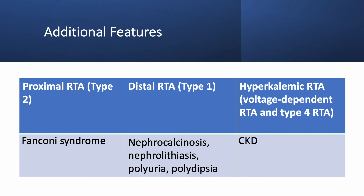Additional features are very helpful. In proximal or type 2 RTA, you can have Fanconi syndrome — with increased urine excretion not just of bicarbonate but also phosphaturia, aminoaciduria, uricosuria, and sometimes severe hypokalemia. In distal RTA, very importantly, you have nephrocalcinosis and nephrolithiasis — calcium phosphate stones, also seen in primary hyperparathyroidism — driven by low urine citrate; in children especially, polyuria and polydipsia can occur. In hyperkalemic RTA, particularly type 4, patients may have chronic kidney disease, especially diabetic nephropathy. In the next lecture we will discuss acidosis in patients with chronic kidney disease.